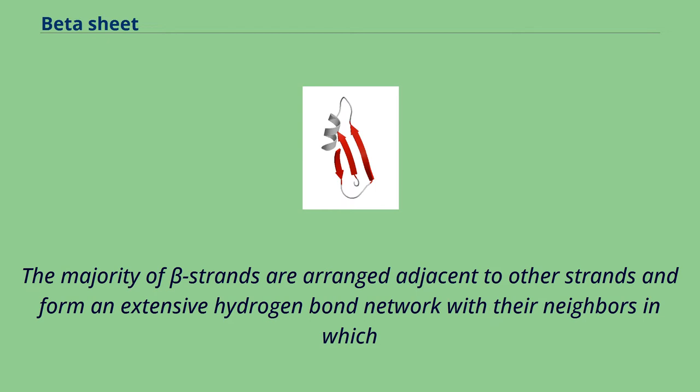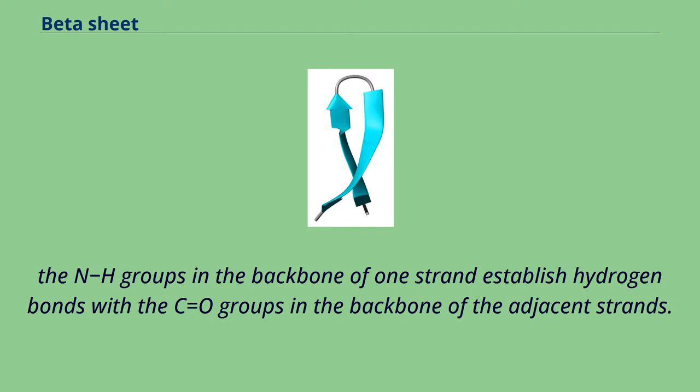The majority of beta strands are arranged adjacent to other strands and form an extensive hydrogen bond network with their neighbors in which the N-H groups in the backbone of one strand establish hydrogen bonds with the C equals O groups in the backbone of the adjacent strands.